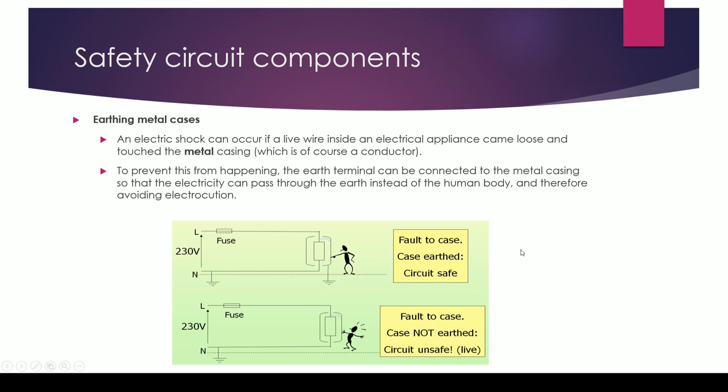And lastly, earthing metal cases. An electric shock can occur if a live wire inside any sort of electrical appliance came loose and touched the metal casing. A metal is of course a conductor, so if anyone were to touch the metal casing they may be electrocuted.